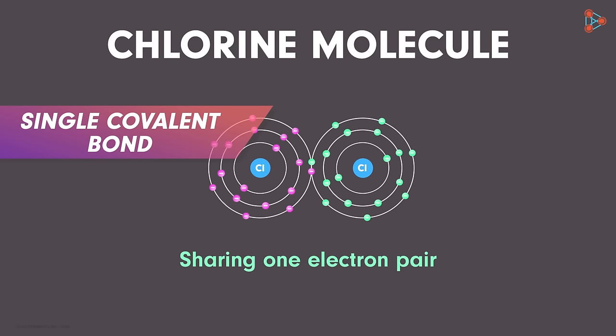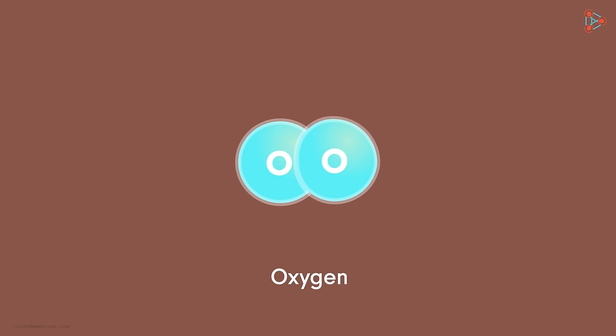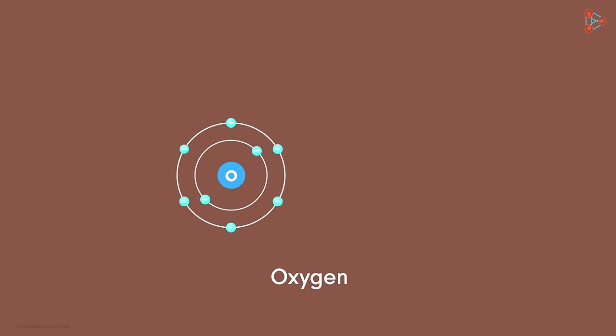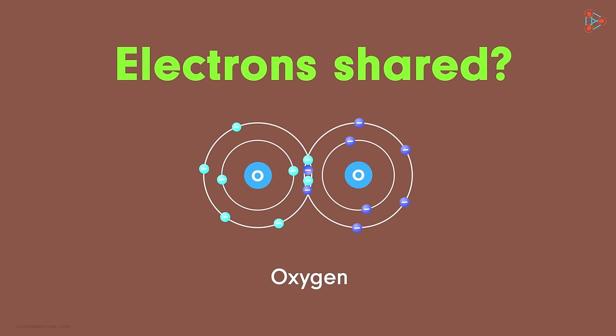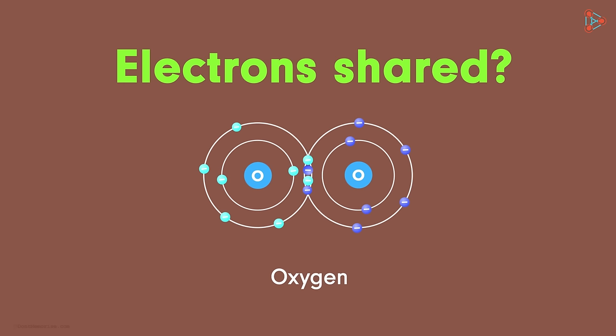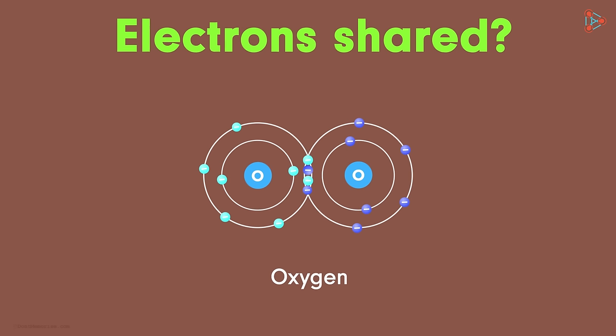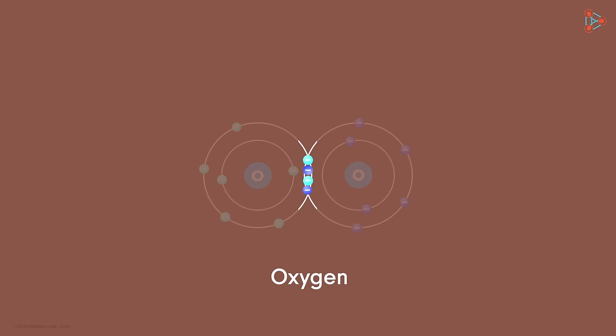So do all atoms form covalent bonds by sharing a single pair of electrons? Think for a moment. We know that oxygen is in the diatomic state. That means one oxygen atom forms a bond with other oxygen atom to form a stable molecule. Do you know how many electrons are shared in this bond? What do you notice? There are four electrons shared.